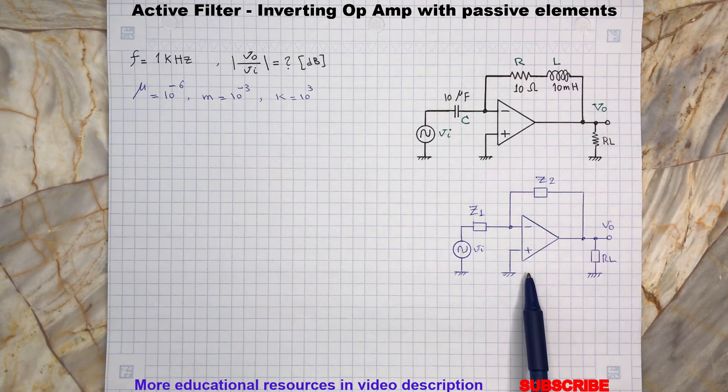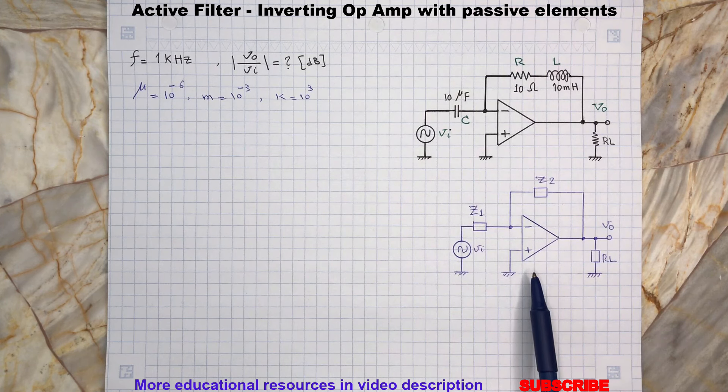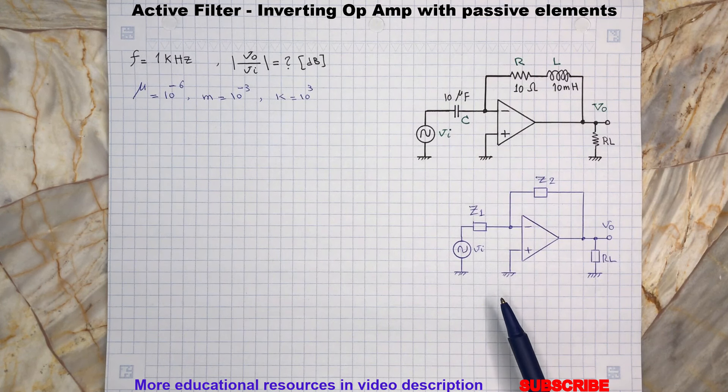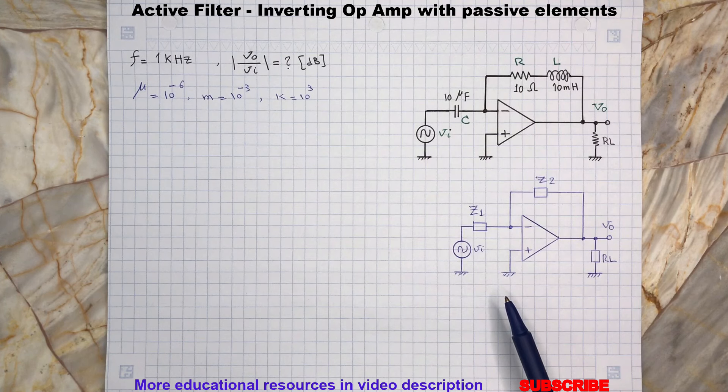As you can see here in the bottom circuit, I replace the capacitor C with impedance Z1 and replace the resistor R and inductor L with impedance Z2.